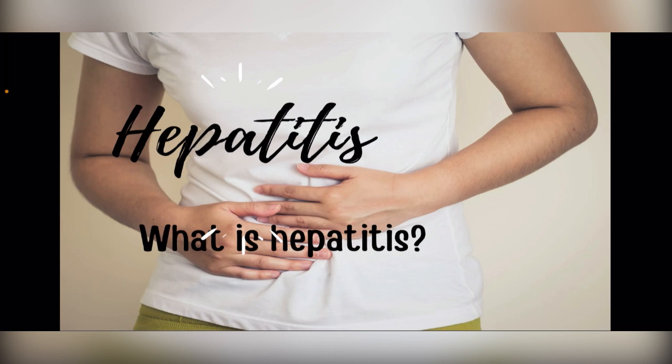Hepatitis C comes from the hepatitis C virus and is one of the most common blood-borne viral infections in the U.S., typically presenting as a long-term chronic condition. Hepatitis D is a rare form of hepatitis that occurs in conjunction with hepatitis B — you cannot contract the hepatitis D virus if you do not already have an existing hepatitis B infection.